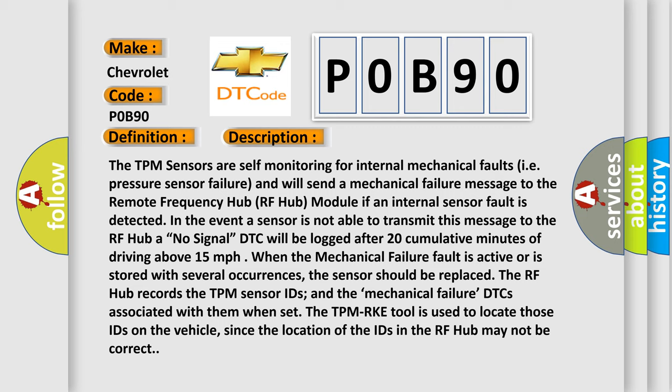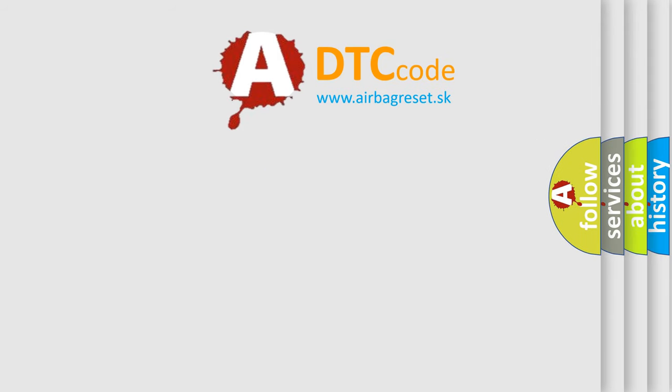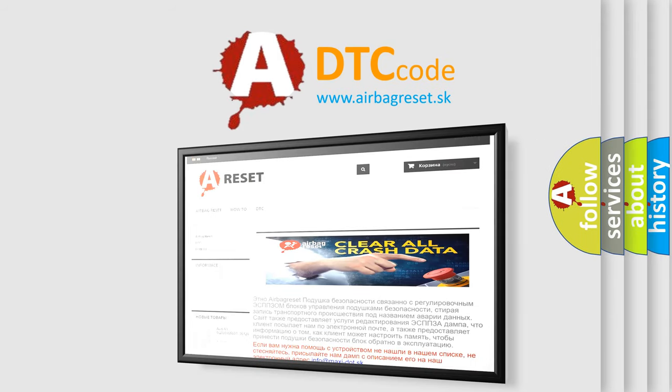The TPM RKE tool is used to locate those IDs on the vehicle, since the location of the IDs in the RF hub may not be correct. This diagnostic error occurs most often in these cases: Tire Pressure Monitoring TPM sensor pressure measure failure, and Tire Pressure Monitoring TPM sensor motion measure failure. The airbagreset.sk website aims to provide information in 52 languages. Thank you for your attention and stay tuned for the next video.